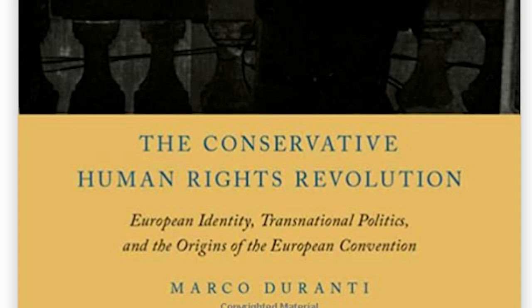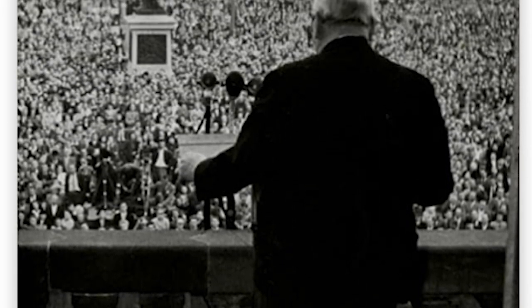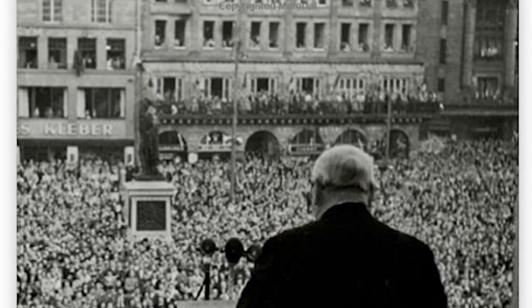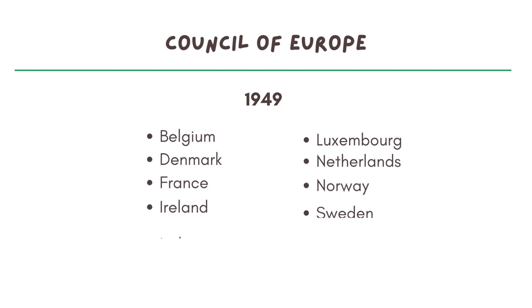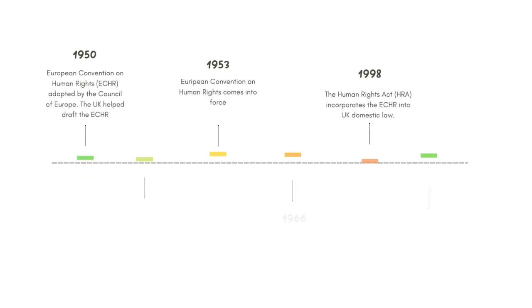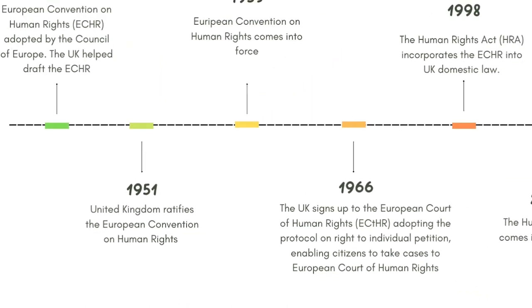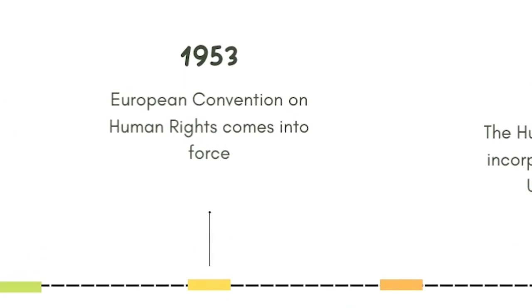This is very ironical indeed, because a very good book came out recently called 'The Conservative Human Rights Revolution.' Actually, the Council of Europe and the European Convention on Human Rights was the creation of Winston Churchill immediately after the Second World War, at the beginning of the Cold War. He was behind the creation of the Council of Europe with 10 countries in 1949, the European Convention on Human Rights in 1950, and we were the first to ratify it in 1951. It came into force in 1953.